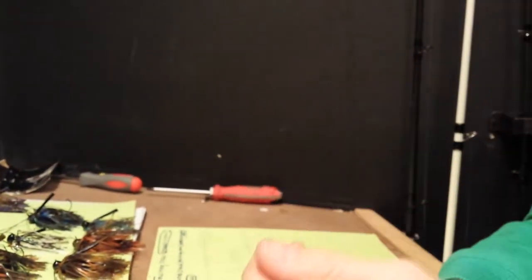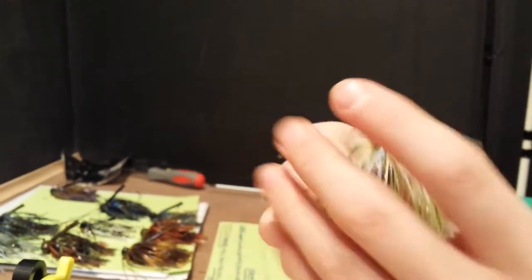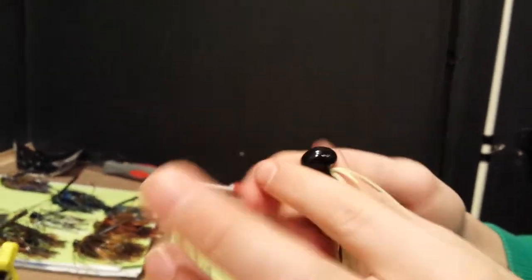Next one we have here is one of my favorites so far. It's the Chartreuse Shad. Not one of my favorites, but it is up there. Chartreuse Shad color, 3.8 ounce black head.